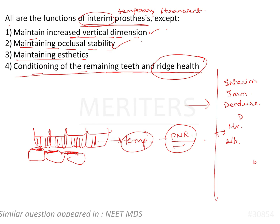But it is not going to condition the remaining teeth. The presence of an interim restoration will not change anything with the remaining natural teeth. So that part of the option is incorrect. Although all four options are nearly correct, because of 'remaining teeth' in that option, we can say this is the most appropriate answer and therefore is incorrect — except.